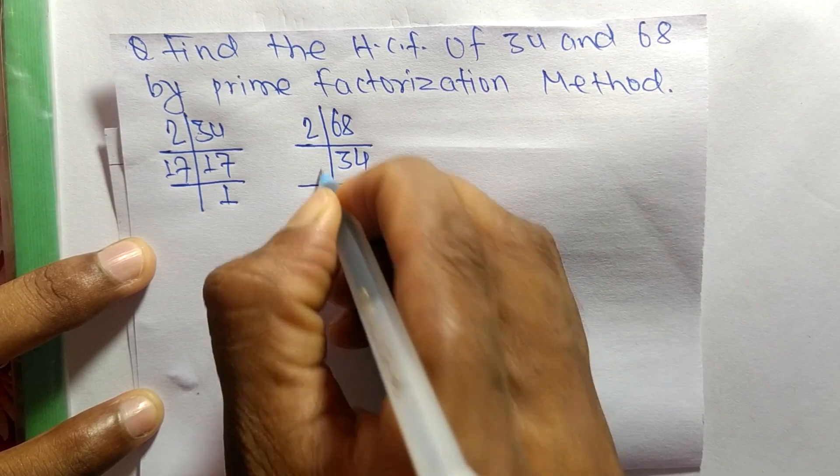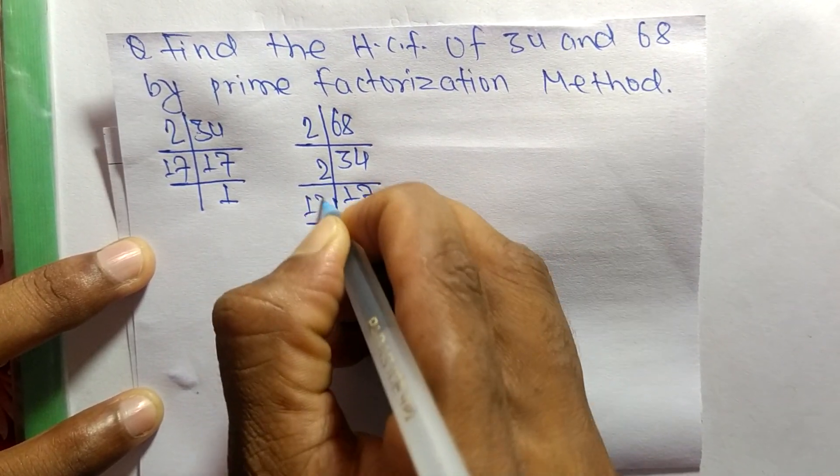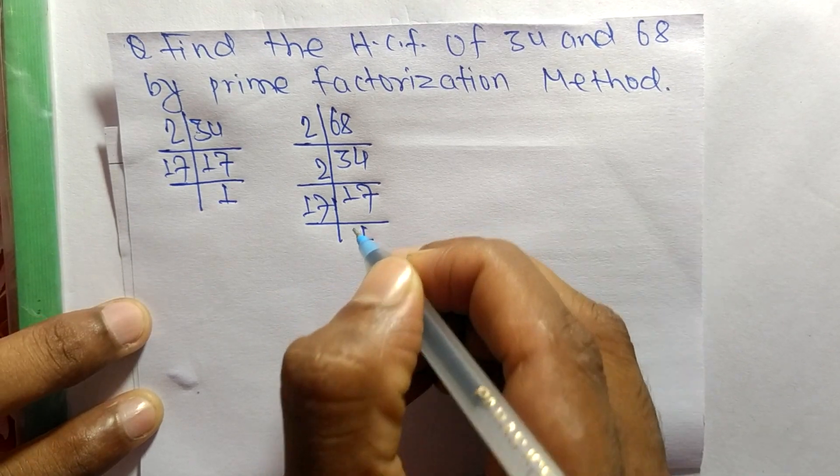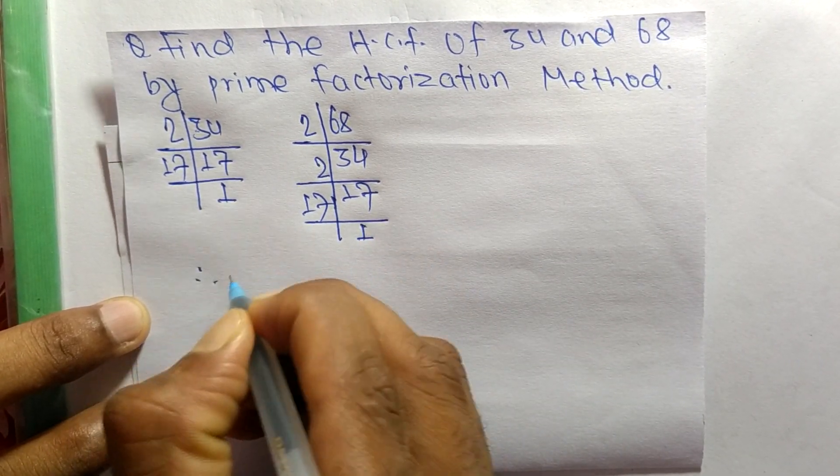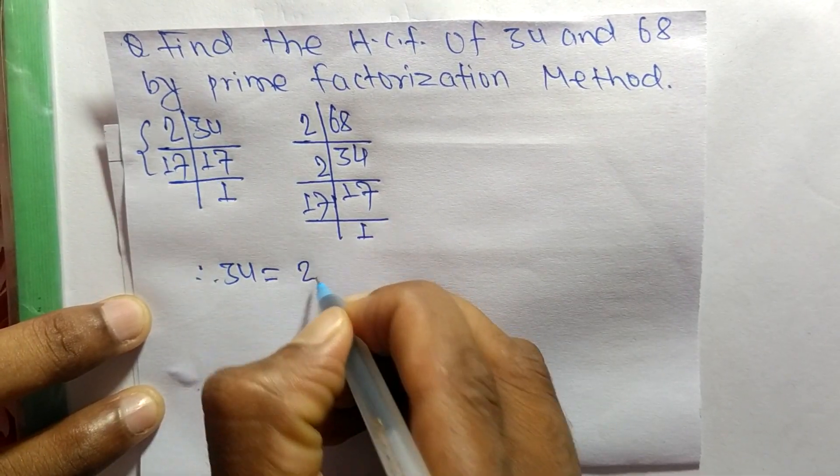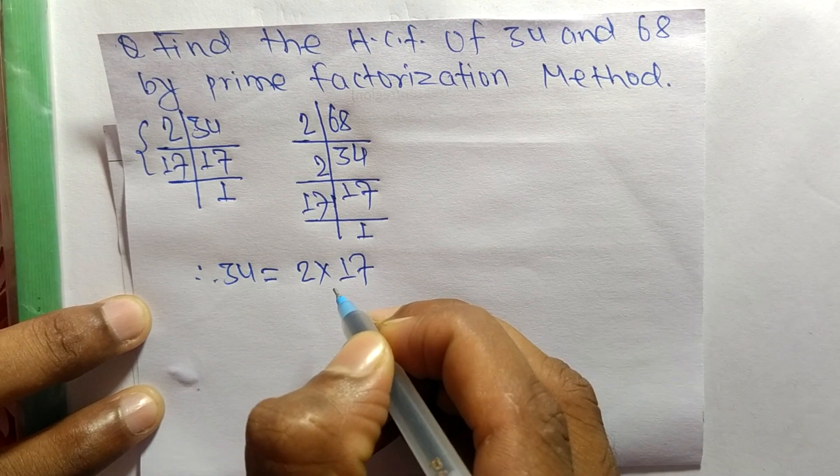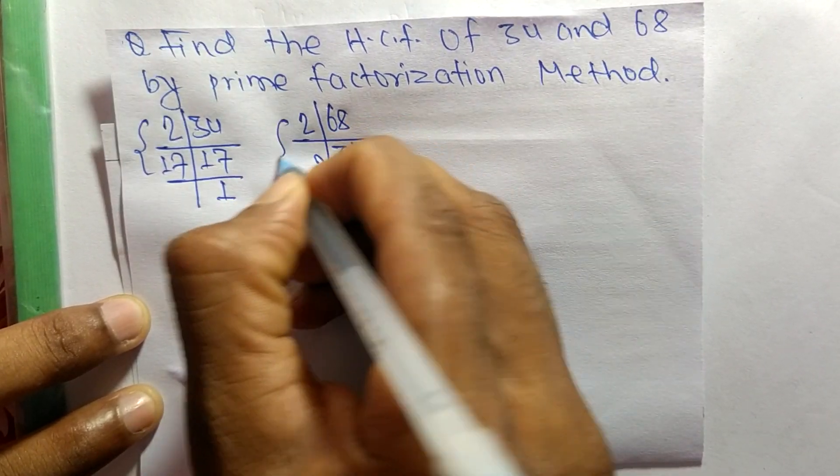2 times 17 equals 34, and 17 times 1 equals 17. So now from these prime factors we can write: 34 is equal to 2 times 17, and 68 is equal to 2 times 2 times 17.